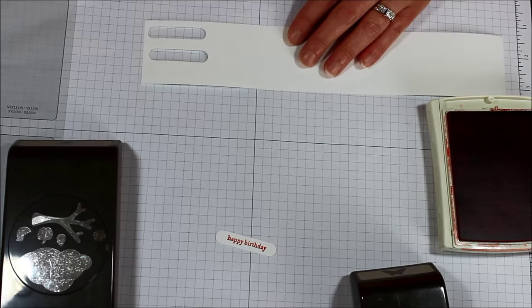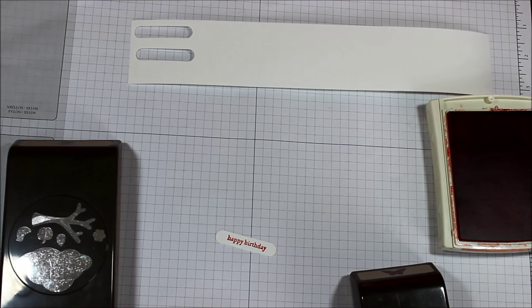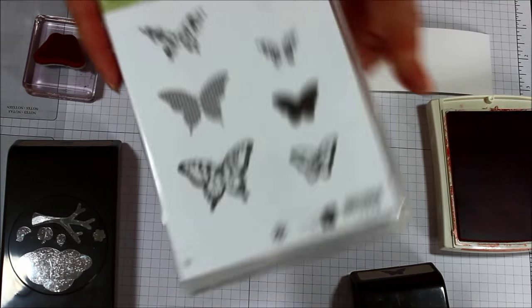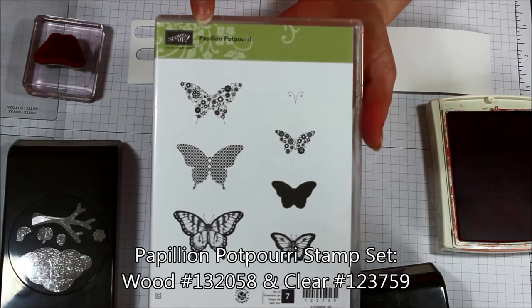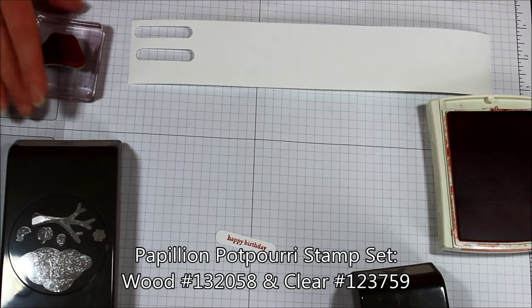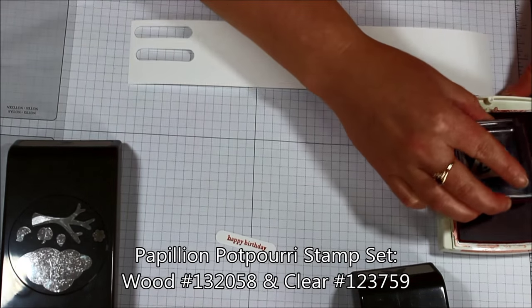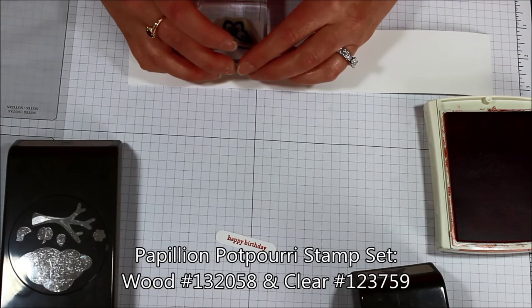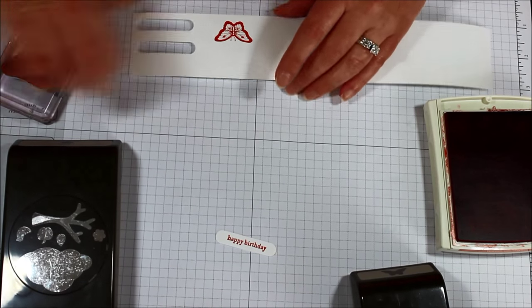Now I'm going to show you the butterfly. This is one of the small butterflies from the Papillon Potpourri stamp set here. So I just have one of the little ones, and again, I'm just going to ink it up and I'm going to stamp.